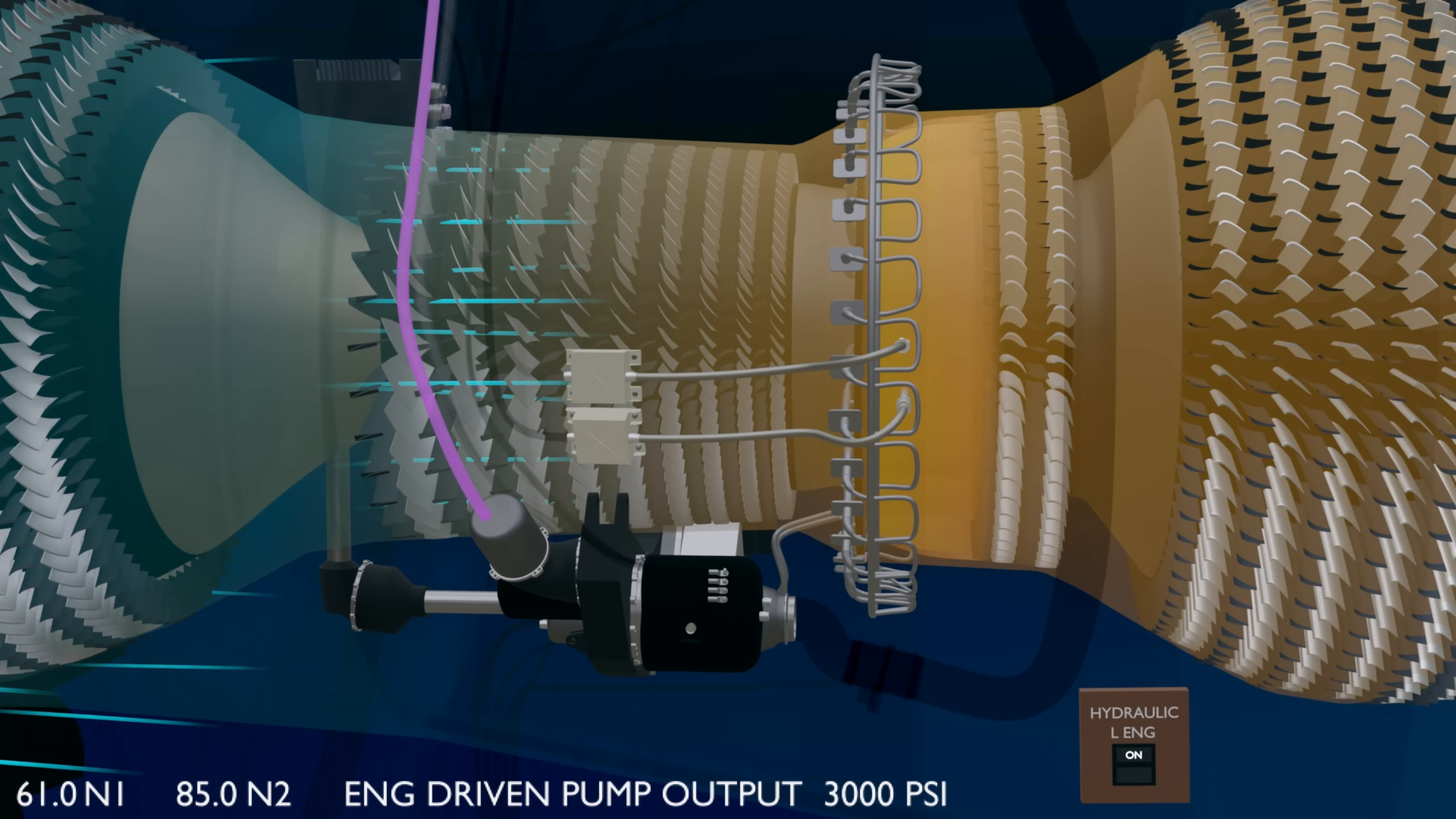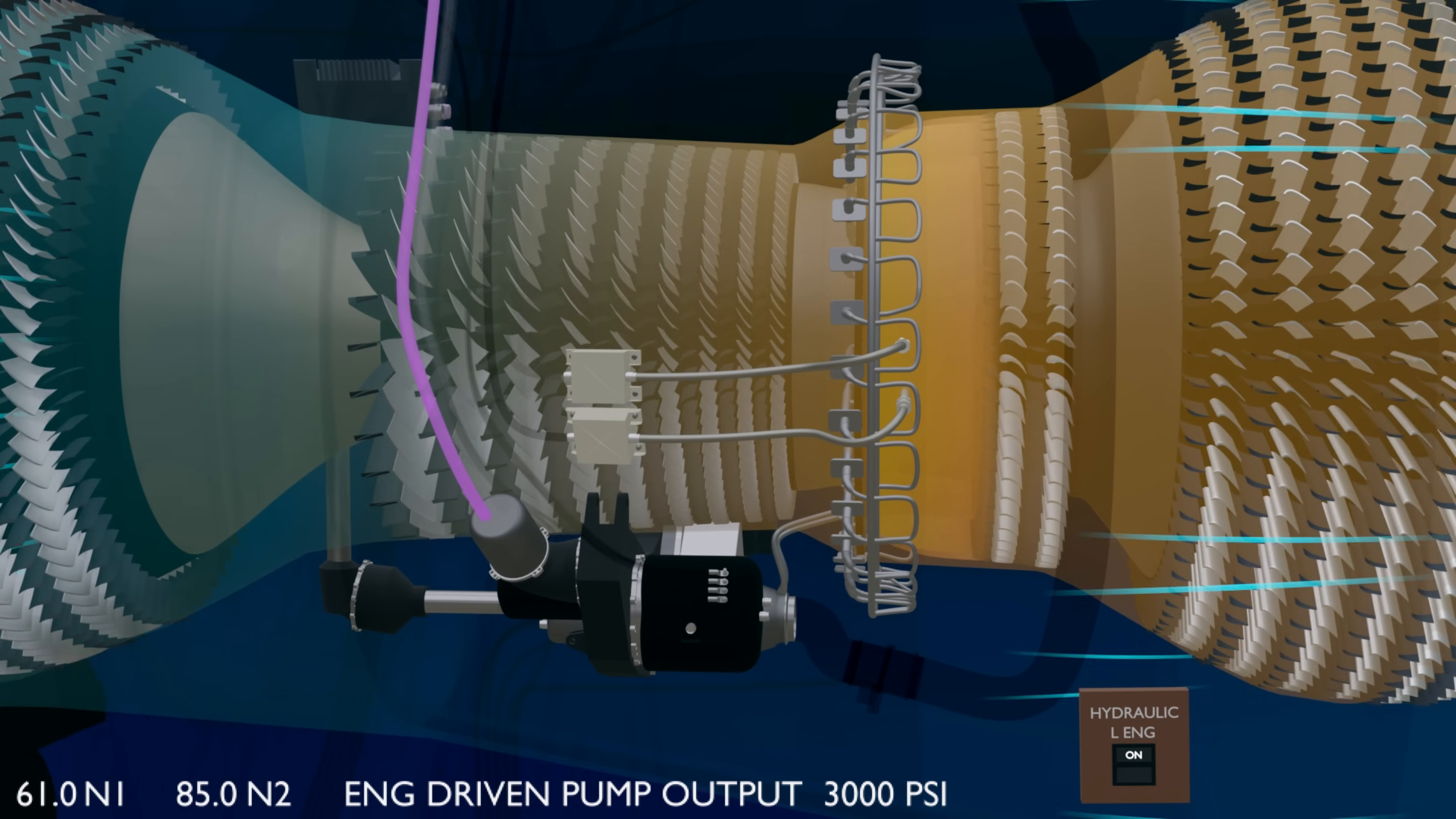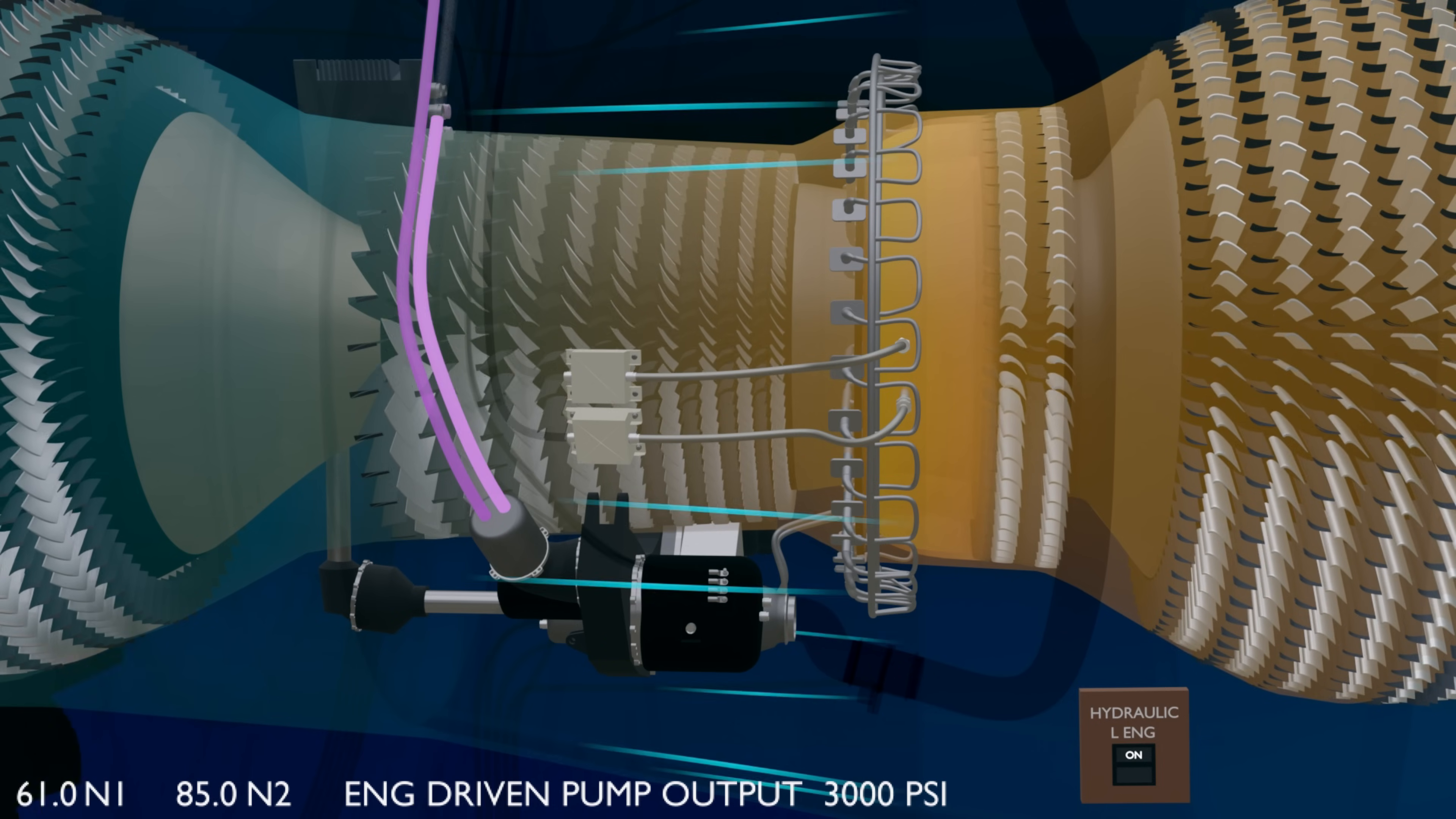The engine hydraulic pump switch is always on for automatic operation. The pump pressurizes the fluid to 3000 lb per square inch pressure and delivers it to the aircraft components.